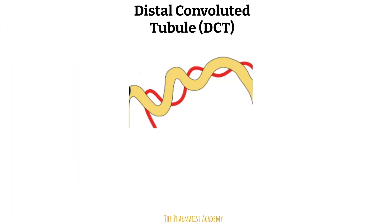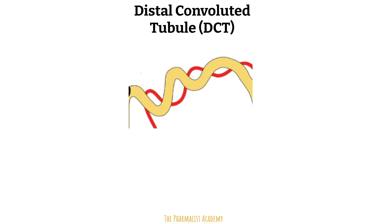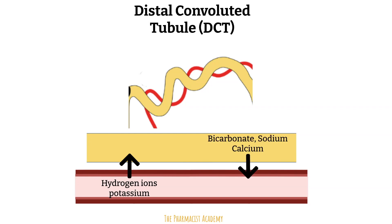Next, we have the distal convoluted tubule, which helps regulate the body's potassium, sodium, calcium, and pH. Hydrogen ions and potassium are secreted into the tubules, while bicarbonate, sodium, and calcium are reabsorbed into the blood.